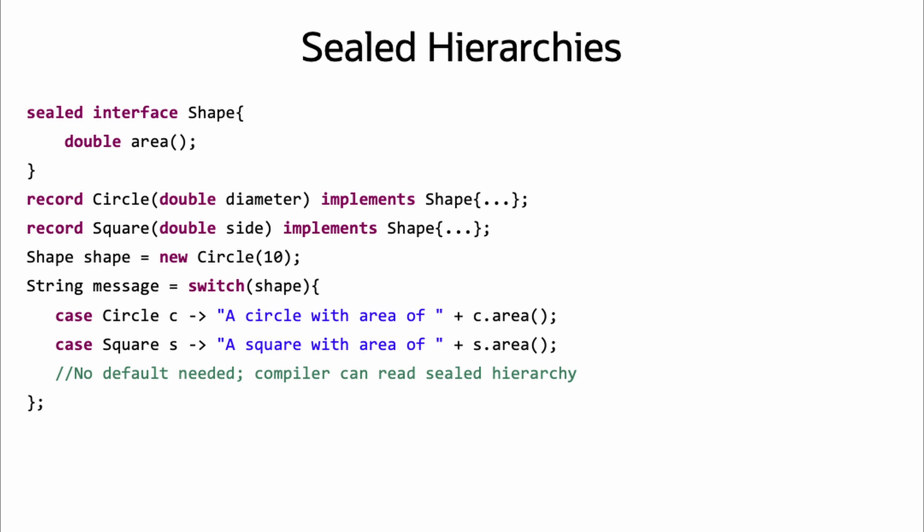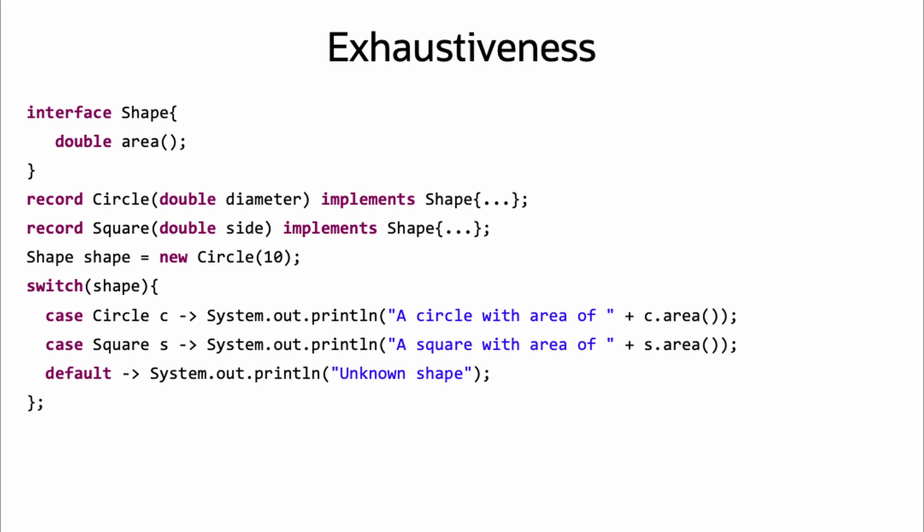The compiler is able to read a sealed hierarchy and use that to determine if a switch is exhaustive. Here, because both circle and square are covered in the switch, a default case is not needed. Whenever a switch uses Pattern Matching, it must be exhaustive, even when written as a statement like in this example.